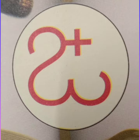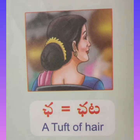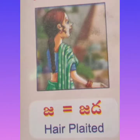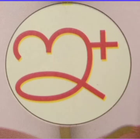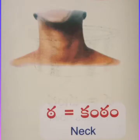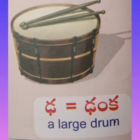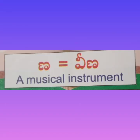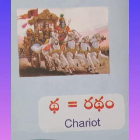This is the inya letter. Cha — chadaram (mat); Cha — chata (a tuft of hair); Ja — jada (plaited hair); Ja — jasham (fish). This is the iny letter. Ta — tomato; Ta — kandham (neck); Da — dabara (a brass ball); Da — dhangka (a large drum).